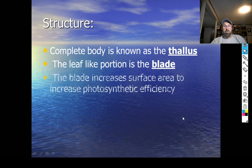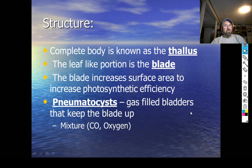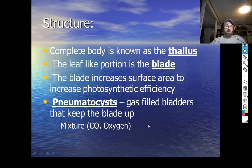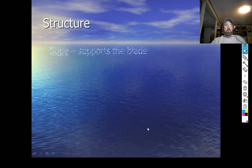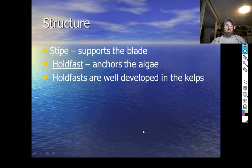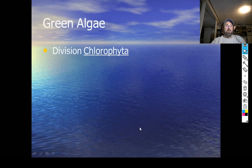The blade increases the surface area to increase photosynthetic efficiency. Pneumatocysts are gas-filled bladders that hold the blade up to get the most sunlight — they're filled mainly with carbon monoxide and oxygen, which are waste products. The stipe supports the blade; the holdfast anchors the algae. In kelps they're really well developed; in some others they're not as well developed.